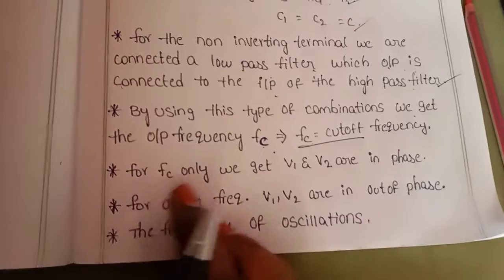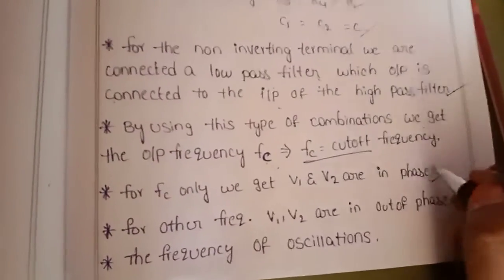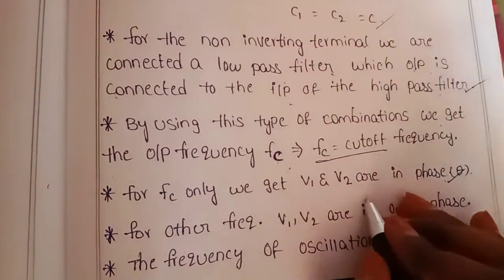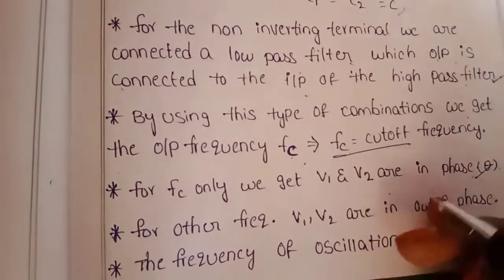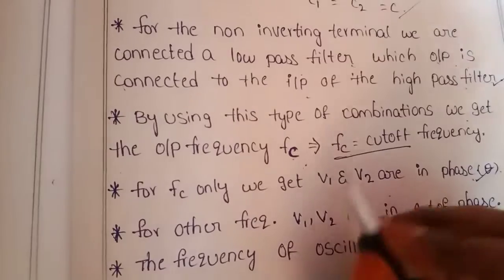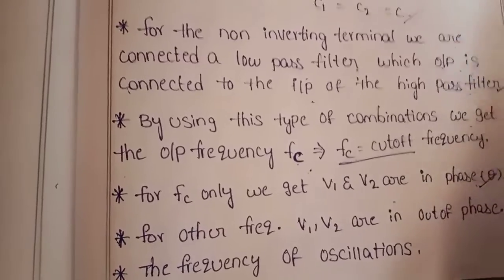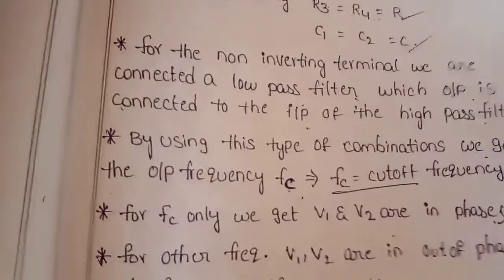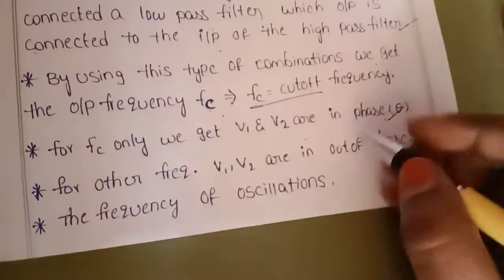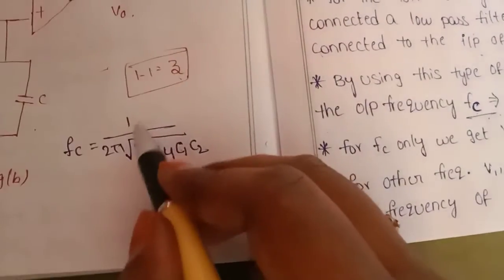At the cutoff frequency fc only, v1 and v2 are in phase. Outside this frequency, they are out of phase by a certain angle. The frequency of oscillations is given by 1 divided by 2π.